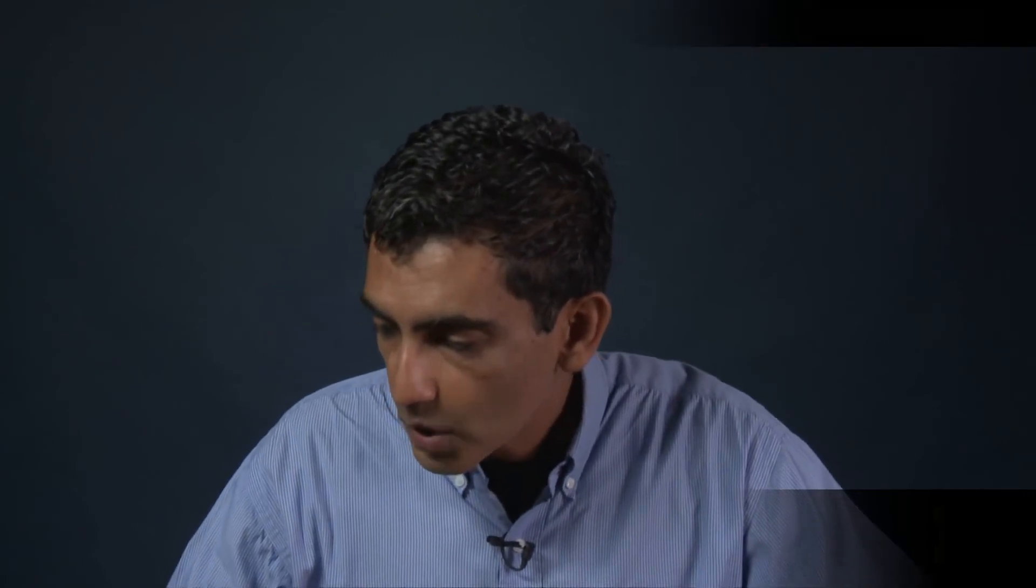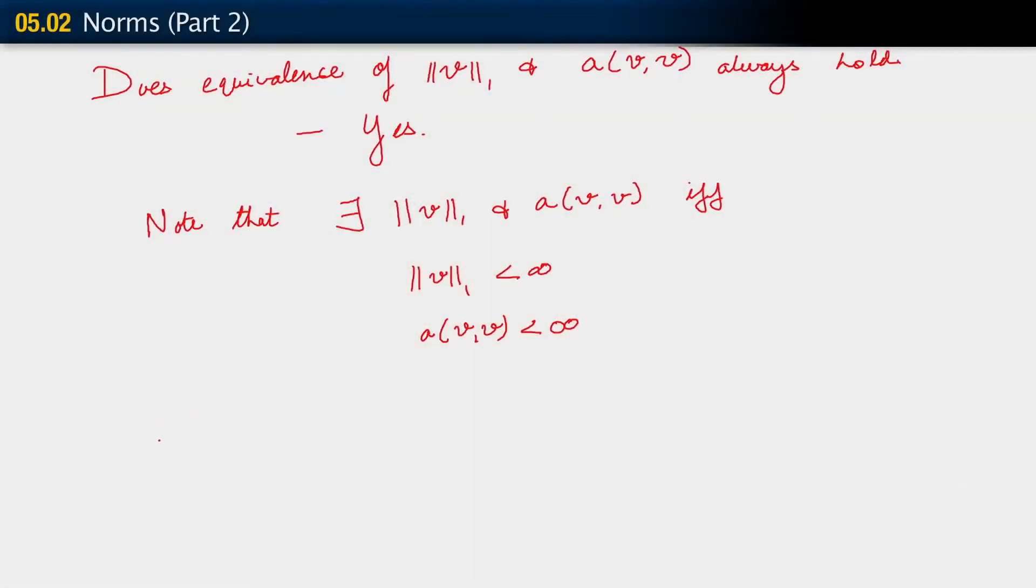So this works. And then, what we can also use is the fact that omega, the measure of omega, is also less than infinity. What this means is that our domain omega is finite.